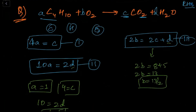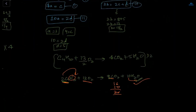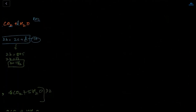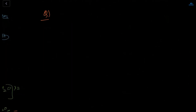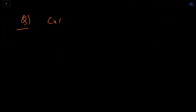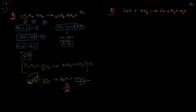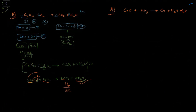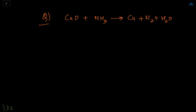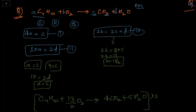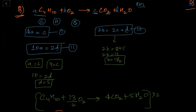A student asks for a new question to try. The teacher gives: CuO + NH3 → Cu + N2 + H2O. Students are asked to try solving this. The teacher begins re-explaining the method for this equation, writing it down.